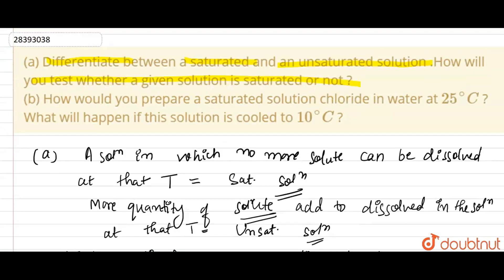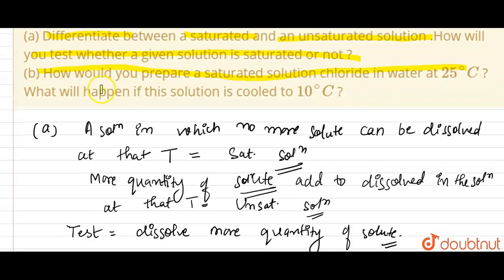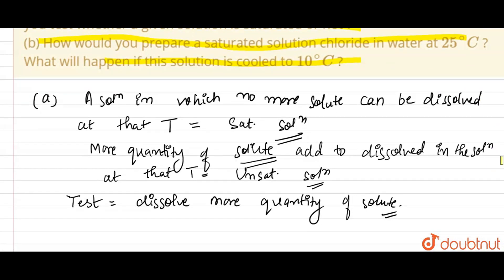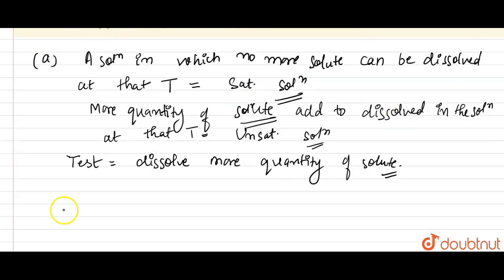Now, the question in part B is: how would you prepare a saturated solution of chloride in water at 25 degrees Celsius? What will happen if this solution is cooled to 10 degrees Celsius? This is the B part of the question.